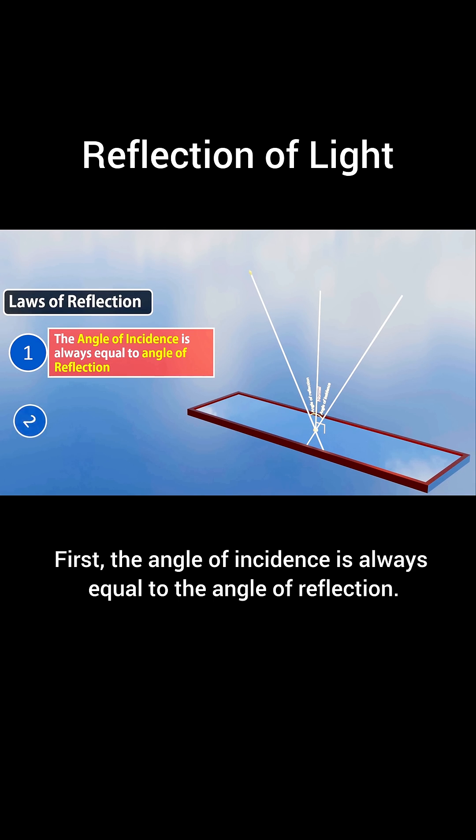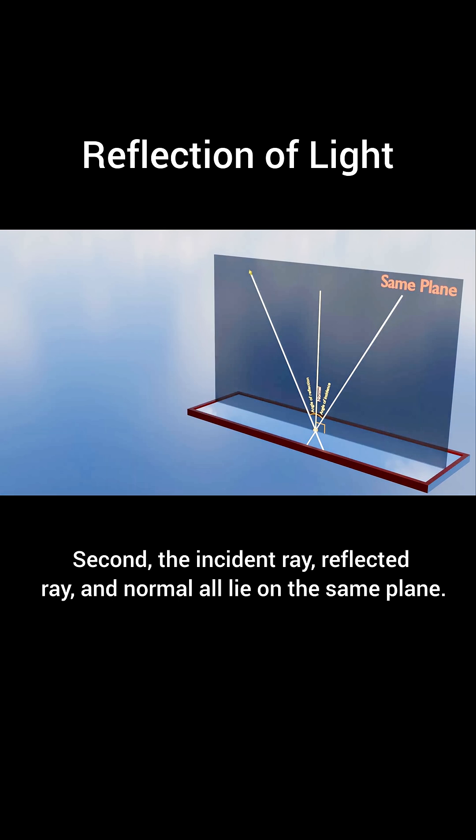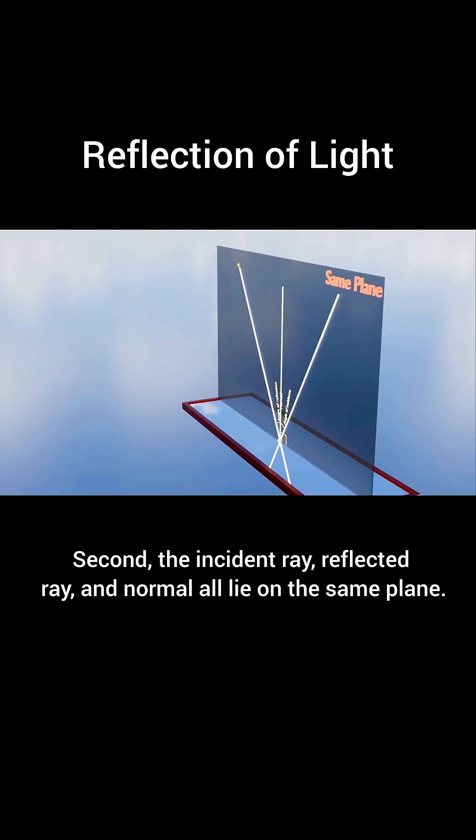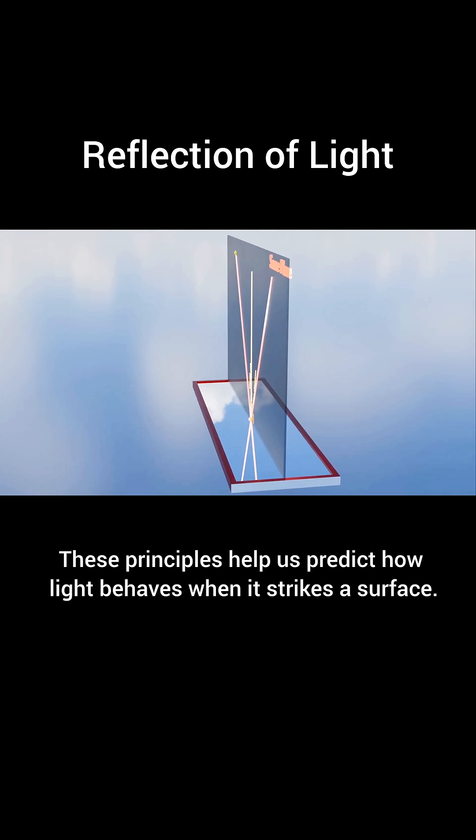Second, the incident ray, reflected ray, and normal all lie on the same plane. These principles help us predict how light behaves when it strikes a surface.